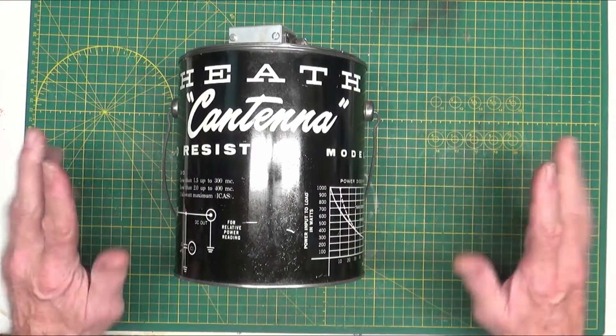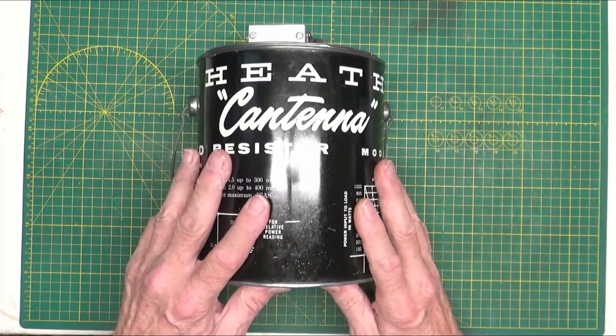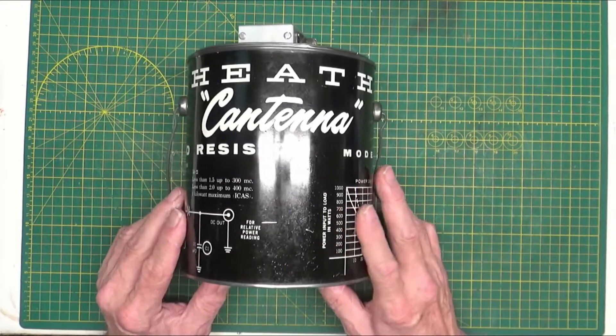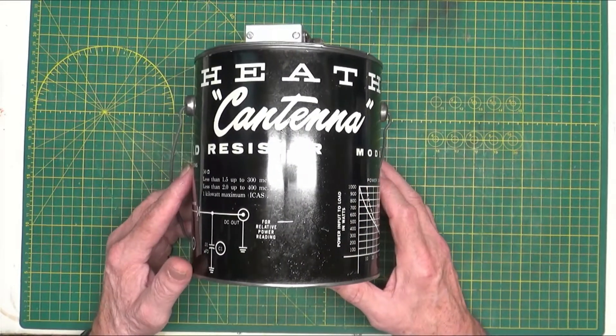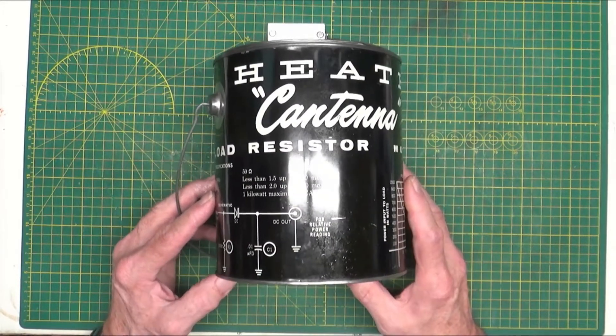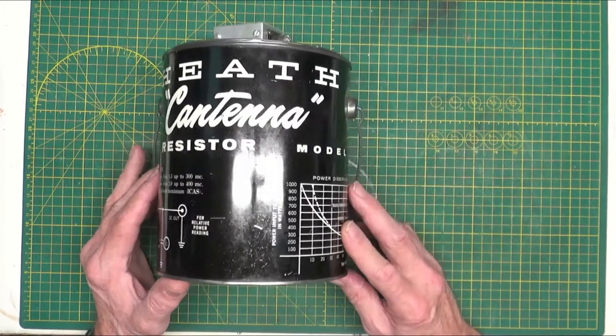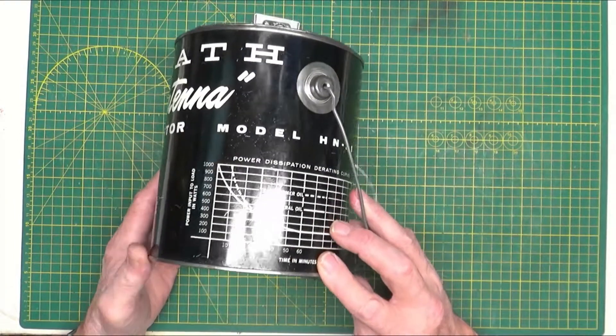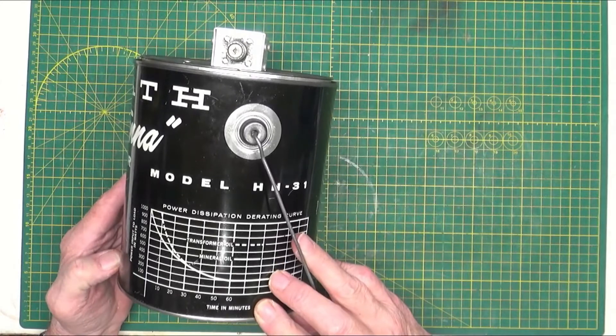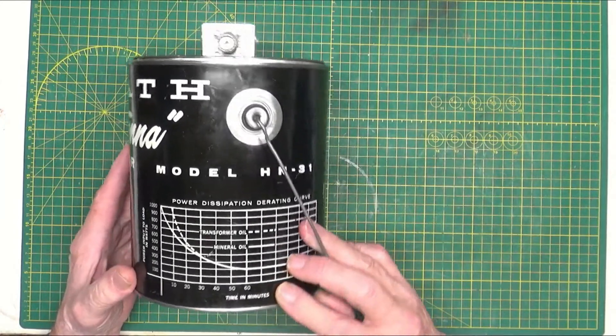Hello, welcome back to my bench. Today I got something that I have lusted after since the 70s: a Heath Cantina load resistor, 50 ohms up to 1000 watts for a very short period of time.